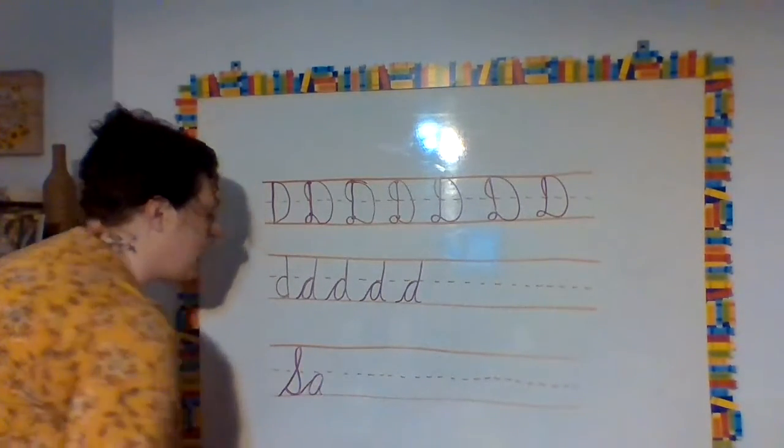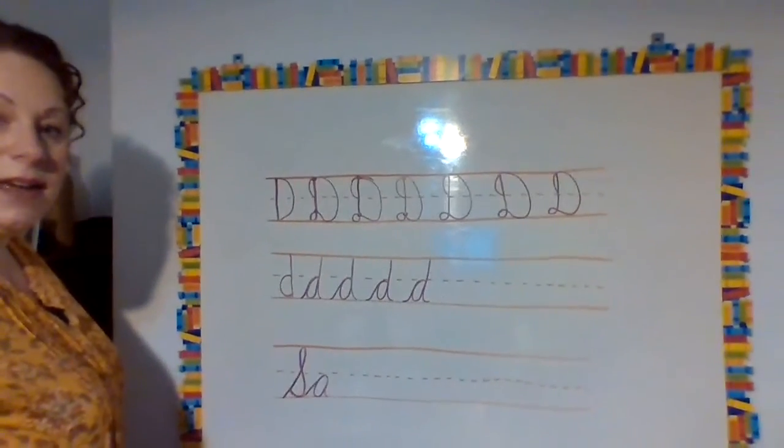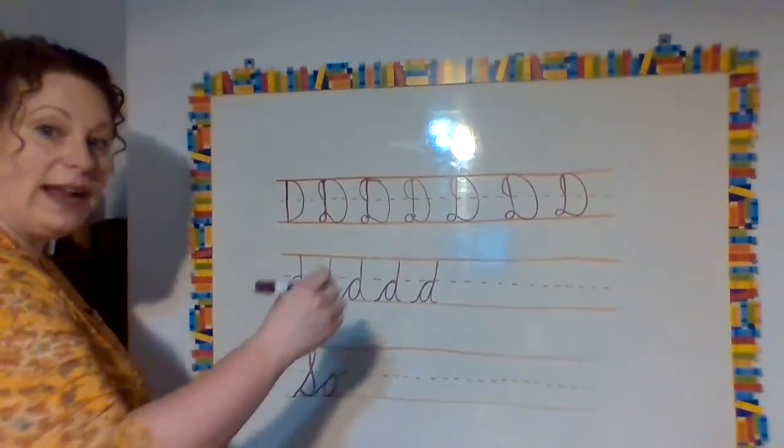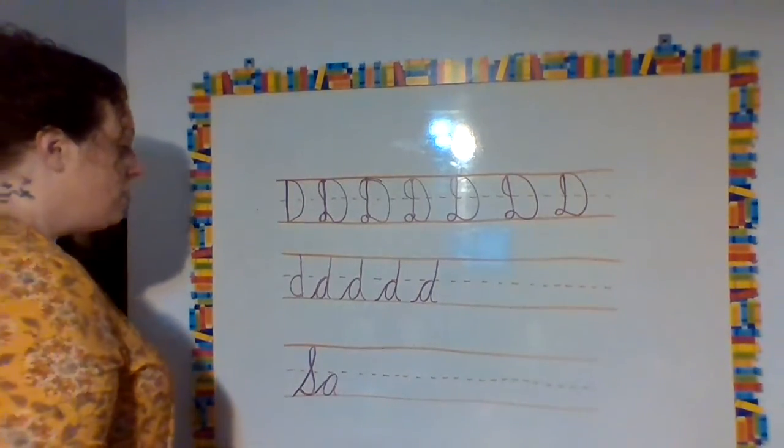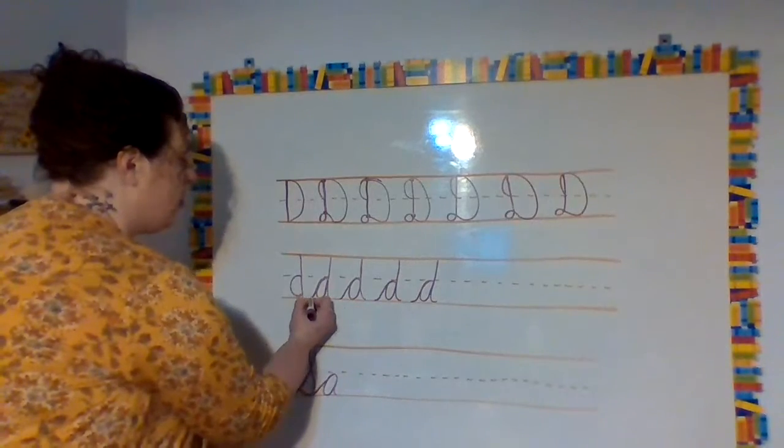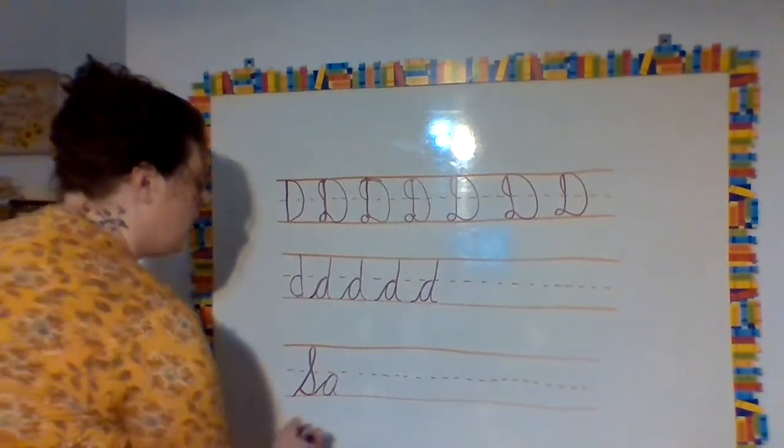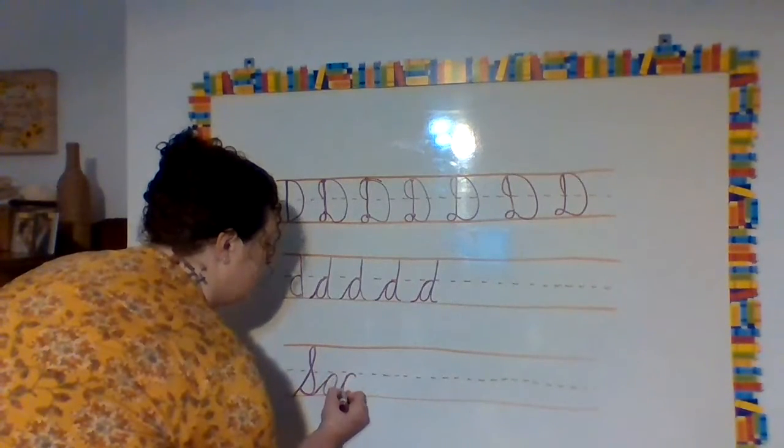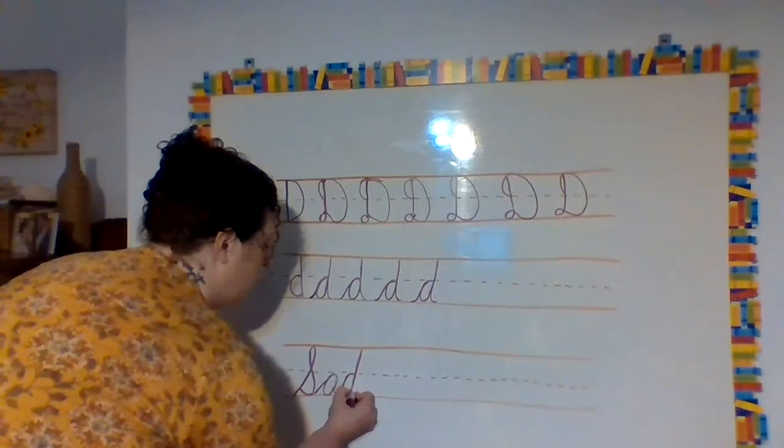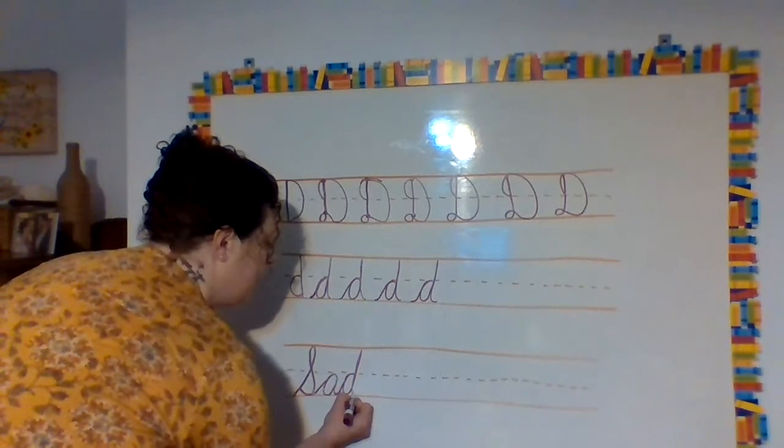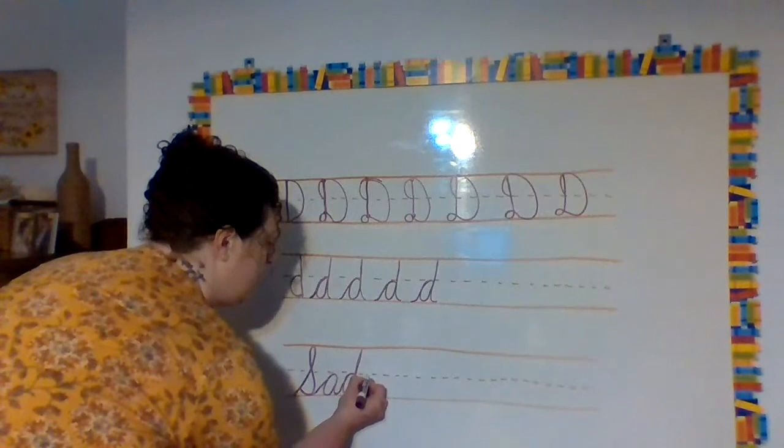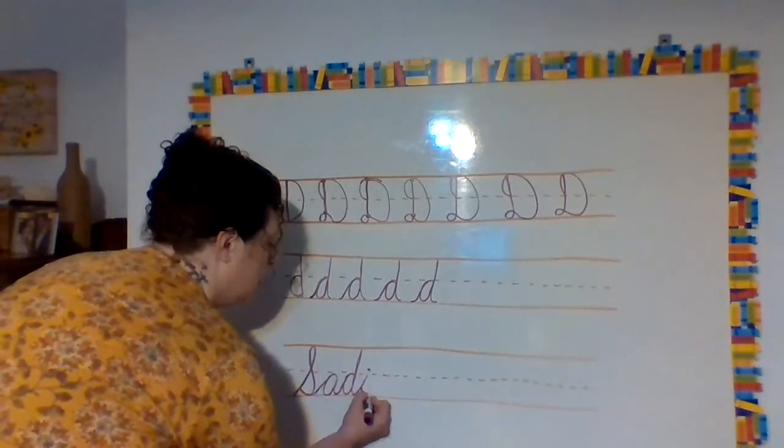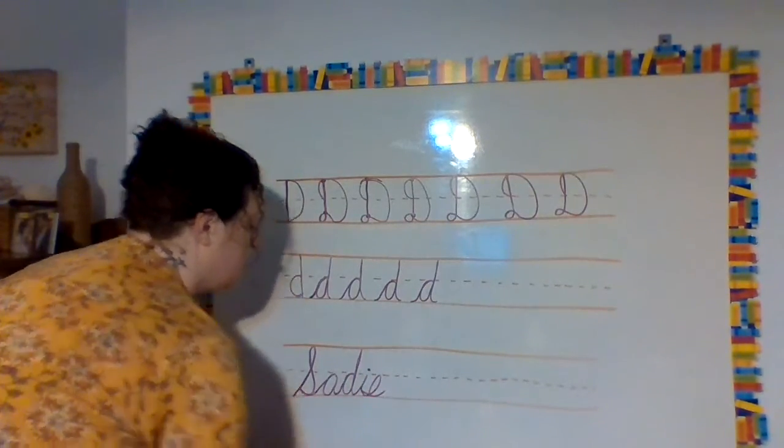And then you're going to stop. Notice how I started to curve my A. Because I'm getting ready to go right into my little D that we just learned. So that's why you're doing your little curve line at the beginning too. So here's your A is going to go right into a D. Curve. Pick right up at that dot where the D ends and go right into an I. Stop. Oops, I didn't touch the line. Sorry. And loop around and there's my E.